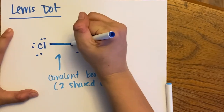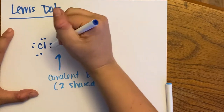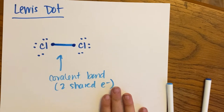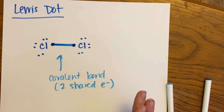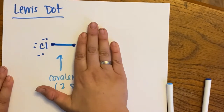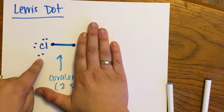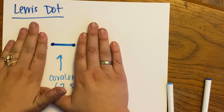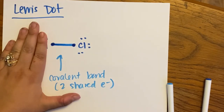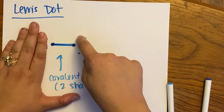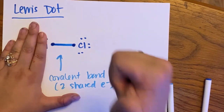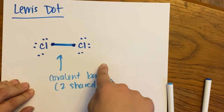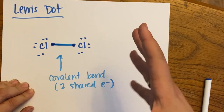One electron came from this chlorine, one electron came from the other chlorine. If I count up now, each chlorine is happy and stable. The chlorine on the left has one, two, three, four, five, six, seven, eight valence electrons — happy and stable. The chlorine on the right also has eight electrons — happy and stable. This is how we draw our covalent structures.